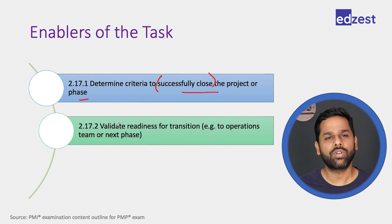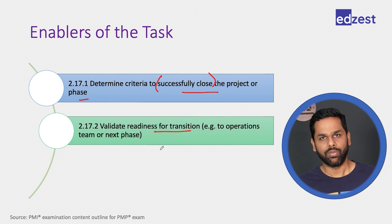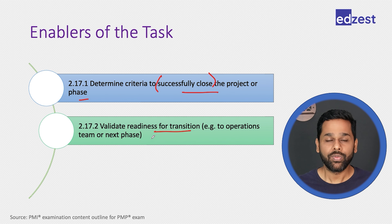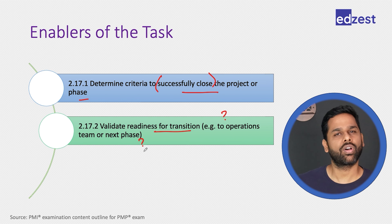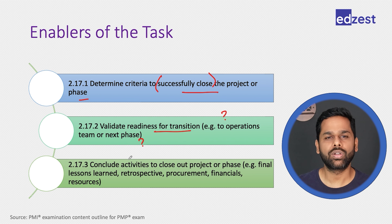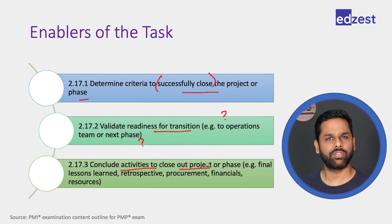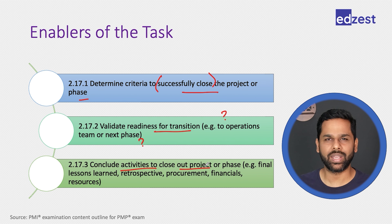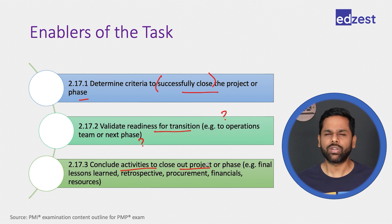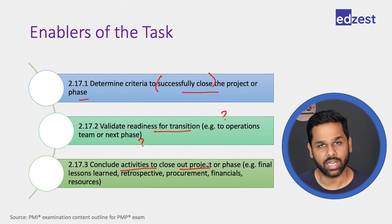The second enabler talks about validating the readiness for transition. We would be transitioning to a different phase, transitioning the product or services to the operations team. We need to validate whether the operations team is ready or not, whether our team is ready for the next phase. The third enabler talks about concluding the activities to close the project — final lessons learned, final retrospective, procurement closure, paying vendors, closing finances, submitting invoices to the customer.